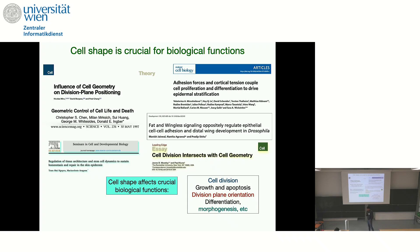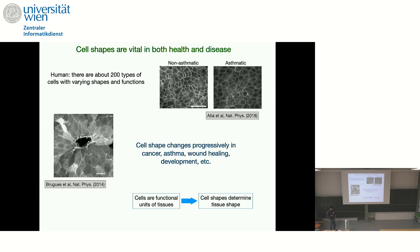In the last couple of decades or more, many studies have shown that there is a strong correlation between cell shape and various biological functions. The main point is that cell shape and various crucial biological functions — such as cell division, growth and apoptosis, division plane orientation, differentiation, or morphogenesis — can be quite strongly correlated.